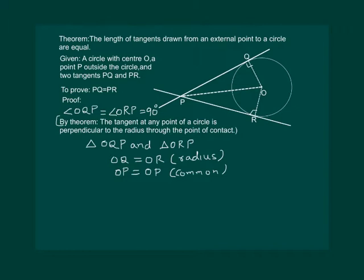And we have proved that they are right triangles. Angle OQP equal to angle ORP equal to 90 degrees. Proved above. So the triangles are congruent by RHS.